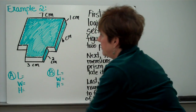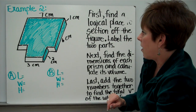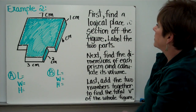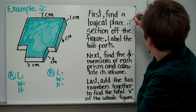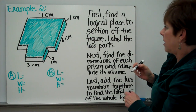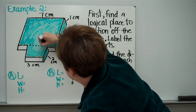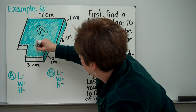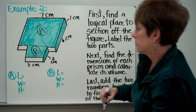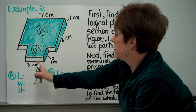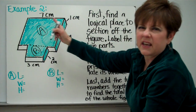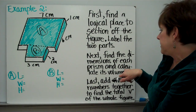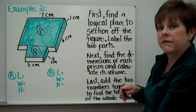Here's example two. This figure has all of the necessary measurements. First, find a logical place that you can section it off. I would think here — we could make this A and we could make this B. But splitting it right down the middle would be illogical; that wouldn't really make sense. I've labeled my two parts. Next, find the dimensions of each prism and calculate its volume.